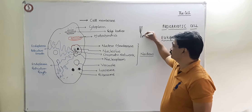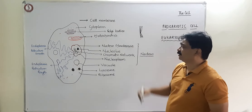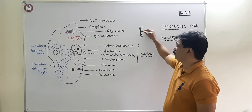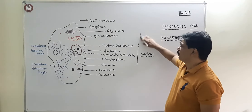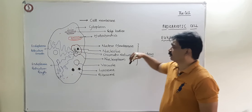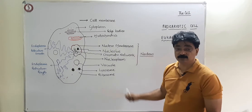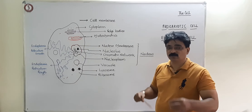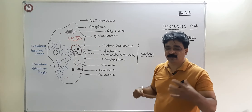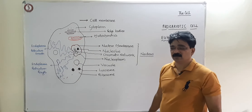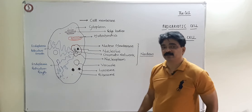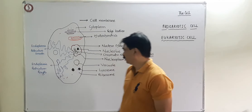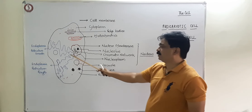Chromosomes are not always clearly visible. When the cell is not dividing, chromosomes appear in a complex, entangled form — like thread all wound together — and this is called the chromatin network. During cell division, they separate and we can count them individually.